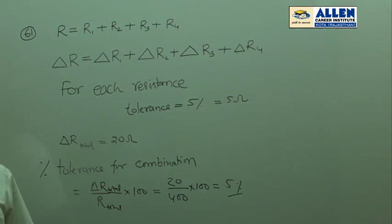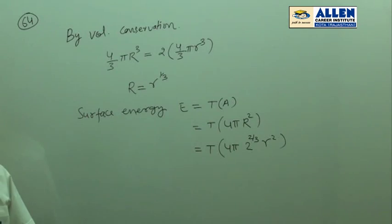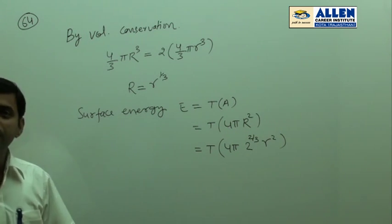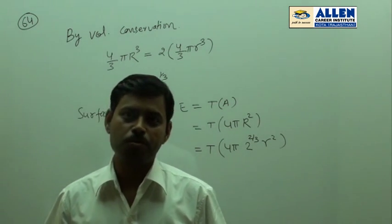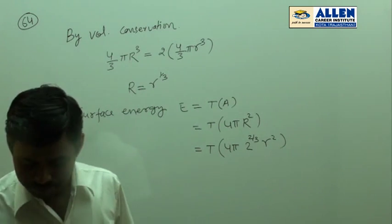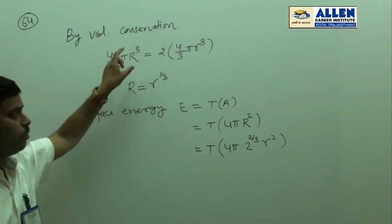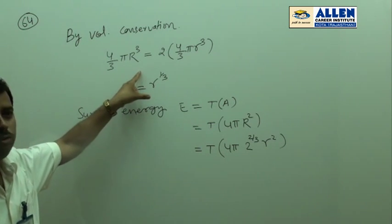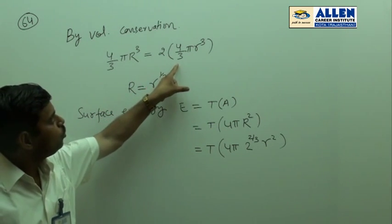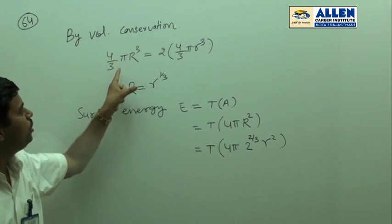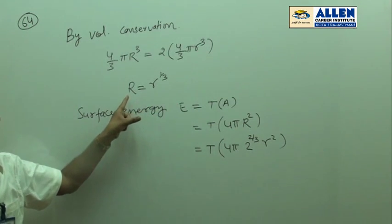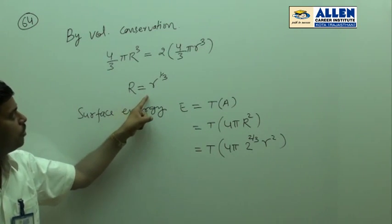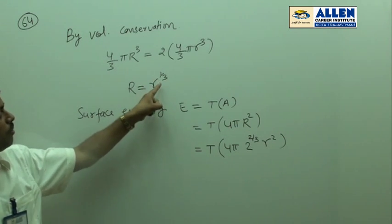The next question is number 64. Two mercury drops are merged to form a single large drop, and the surface energy of the bigger drop is required. By volume conservation, the volume of the bigger drop equals the volume of two small drops, so 4 upon 3 pi R cube equals twice of 4 upon 3 pi r cube. This way we can find the radius of the bigger droplet, which is R equals 2 to the power 1 by 3 times r.